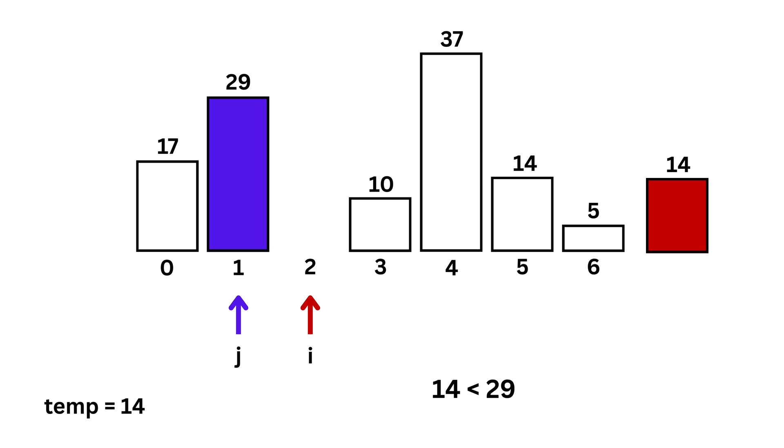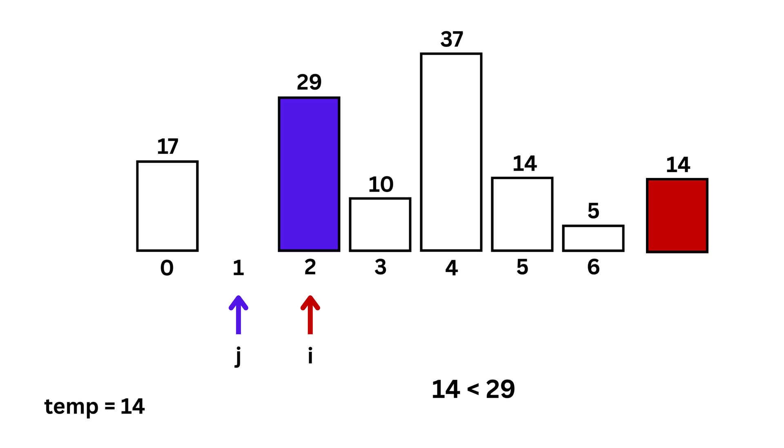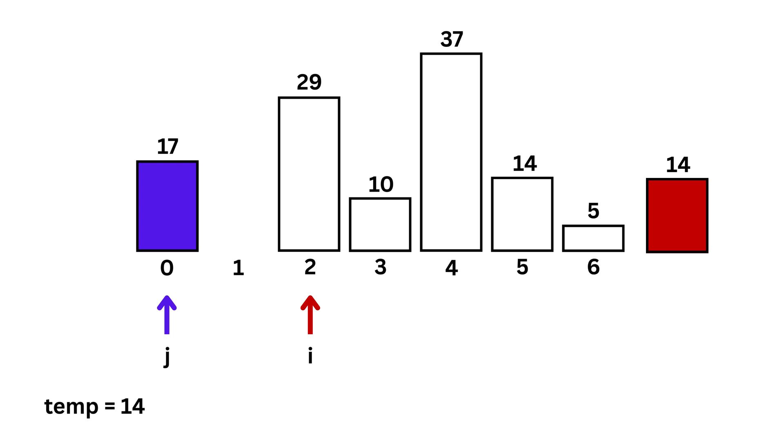Since 14 is smaller, we shift 29 one step to the right. Now, we move the pointer j to the left by one step, and thus j is now equal to 0, pointing to 17.